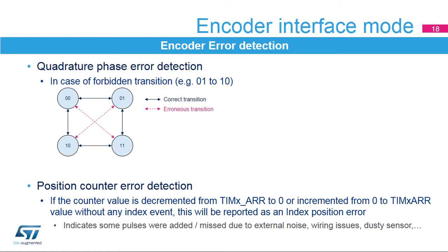The timer unit detects two types of encoder errors. For encoder configurations with two quadrature signals, it is possible to detect transition errors — the reading on two inputs corresponds to a two-bit gray code, and a single bit is expected to change at once; a transition error interrupt is generated when an erroneous transition occurs. For encoders with an index signal, it is possible to detect abnormal operation resulting in excess pulses per revolution. An encoder with N pulses per revolution provides 4N counts per revolution, and the index resets the counter every 4N clock periods. If the counter overflows or underflows without any index event, this is reported as an index position error.